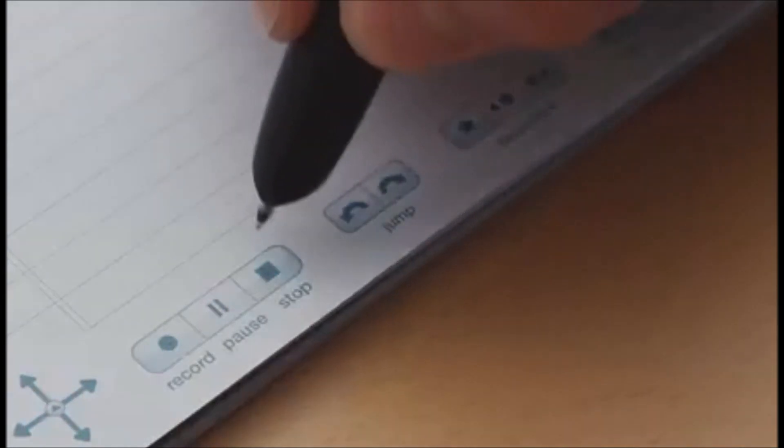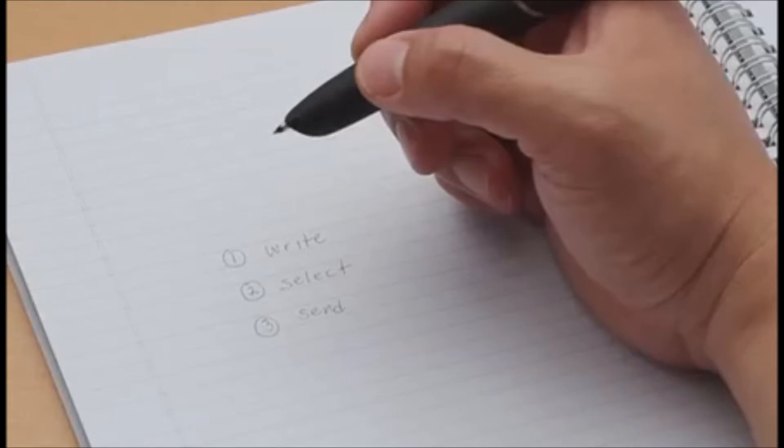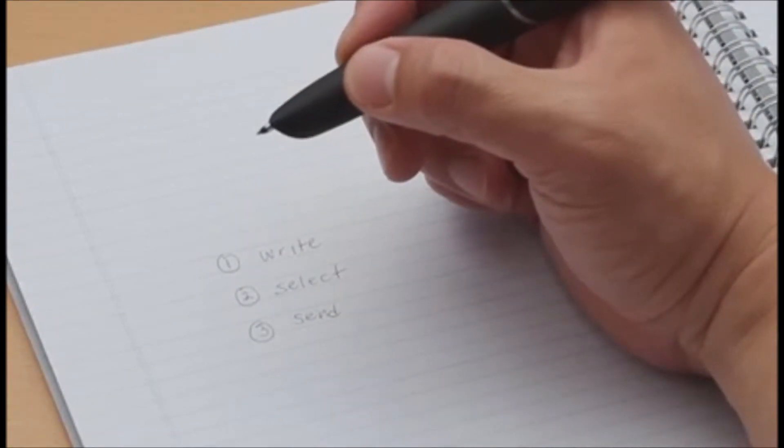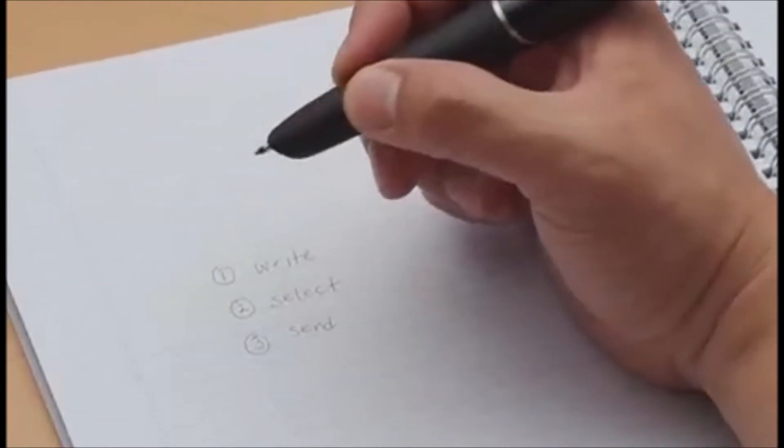Tap the stop button at the bottom left-hand corner of your paper to stop your recording. To play back your recording, tap your handwritten numbers. 1. Write a note. 2. Select a note.